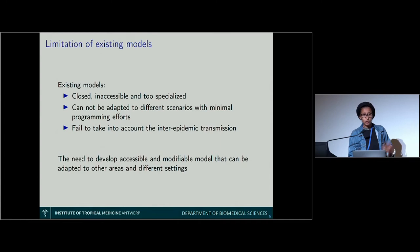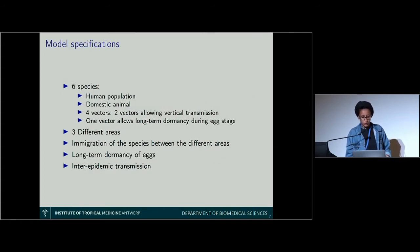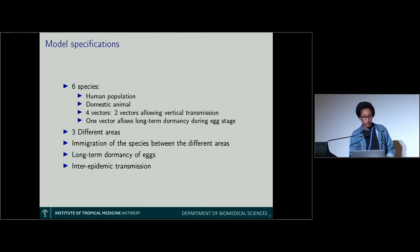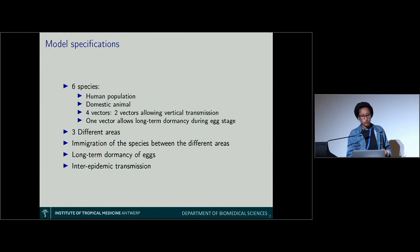That's why we saw the need to develop a new model that is better, modifiable, and can be adapted to other sites with very limited programming effort. In our model we are modeling six species: human populations, domestic animals, and four vector species. Two of those vectors allow vertical transmission from mosquito to eggs; one of those two also allows long-term dormancy of eggs — the fact that eggs can survive through several years. We also modeled three different area zones, allowing emigration of human and animal populations between those three zones, and modeled this long-term dormancy and inter-epidemic transmission.